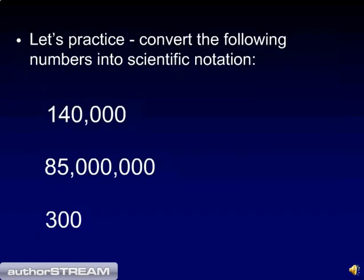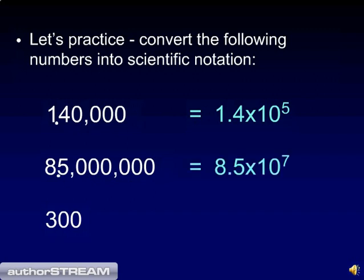Let's practice converting some numbers into scientific notation. To convert the number 140,000, you move the decimal point 1, 2, 3, 4, 5 spaces to the left, therefore the number becomes 1.4 times 10 to the fifth. To convert the number 85,000,000 into scientific notation, you move the decimal point 7 places to the left, and therefore the number becomes 8.5 times 10 to the seventh.